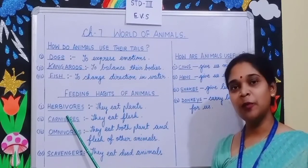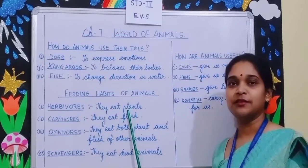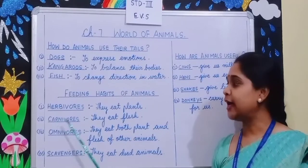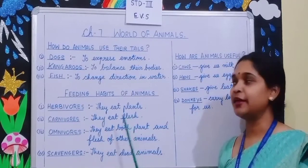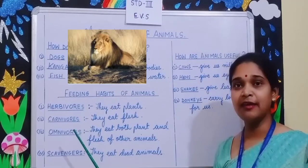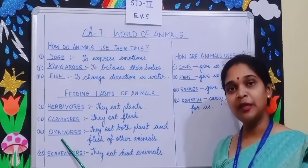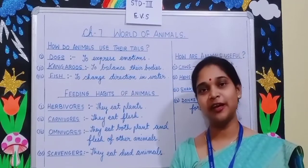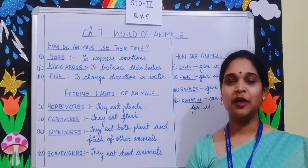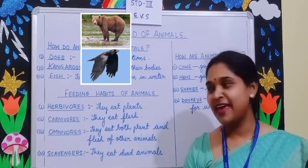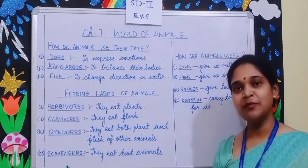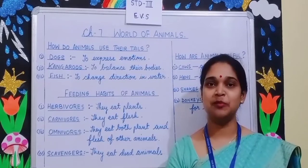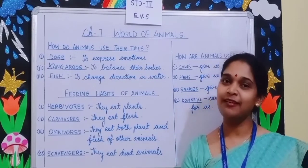Feeding habits of animals. Some animals are herbivores — they eat plants, like cow and goat. Some animals eat the flesh of other animals; they are called carnivores, like lion. Omnivores are animals that eat both plants as well as flesh of other animals, like crow and bear. Scavengers are animals that eat dead animals. They eat the flesh of dead animals and help us to keep our surroundings clean.